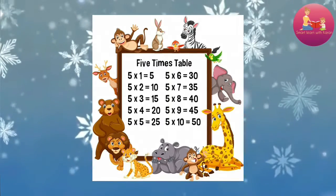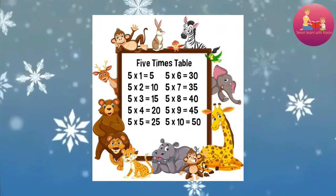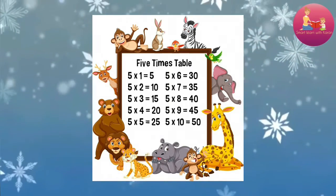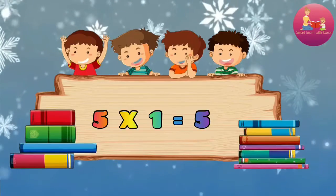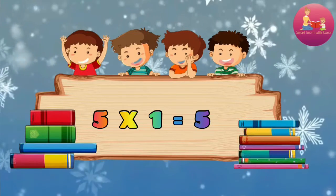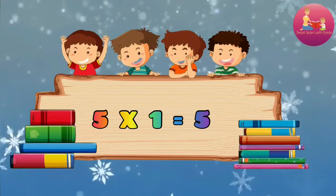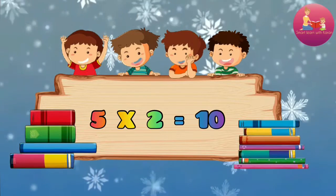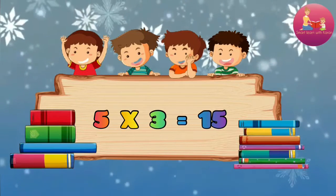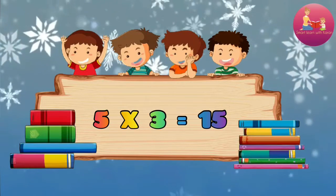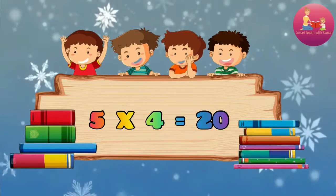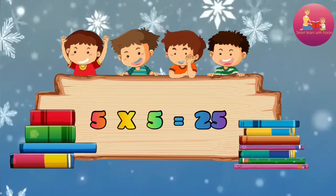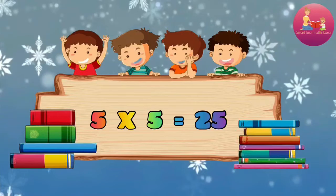5 times table. 5 into 1 equal to 5. 5 into 2 equal to 10. 5 into 3 equal to 15. 5 into 4 equal to 20. 5 into 5 equal to 25.